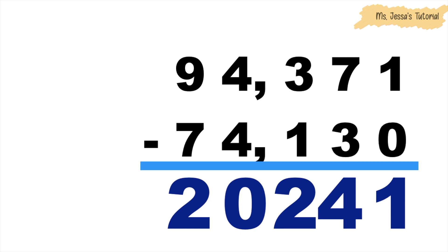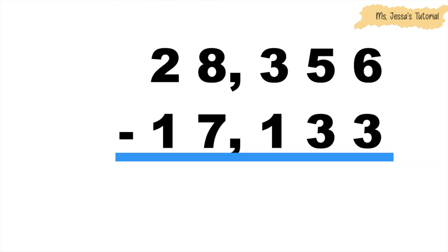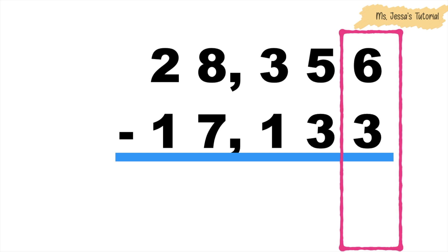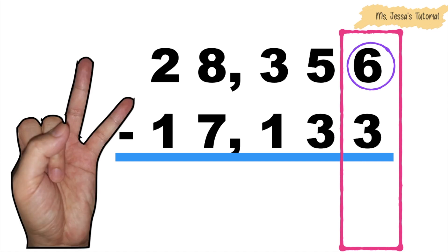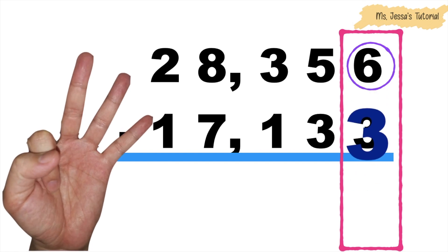How about if we have this? Again, children, we're going to start subtracting from the ones place. This time, we're going to count backwards. We're going to start from 6 until we reach 3. 6 on your mind, children. 6, 5, 4, 3. That means 6 minus 3 is equal to 3.